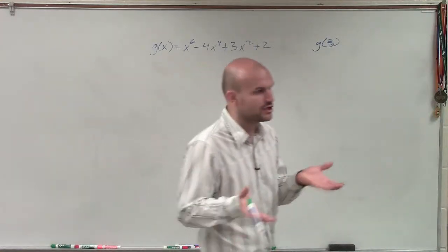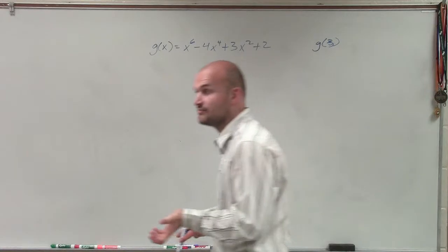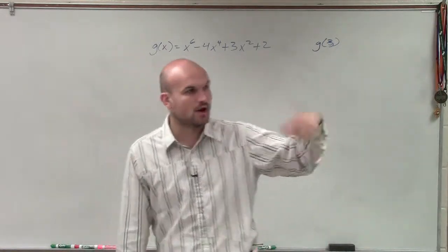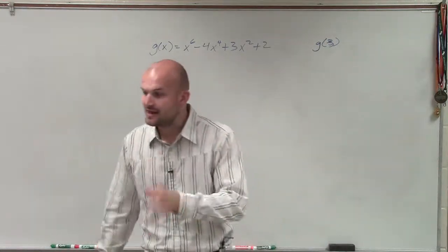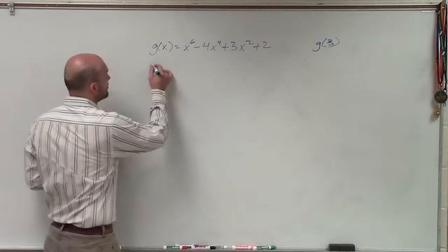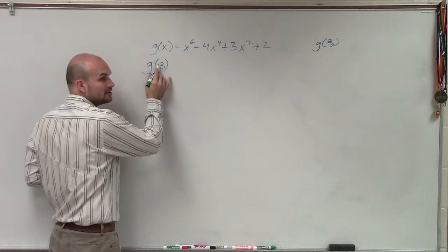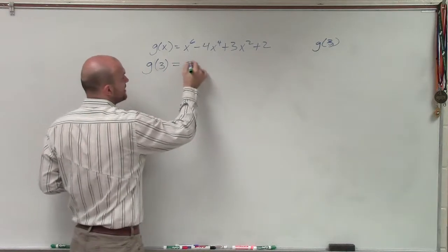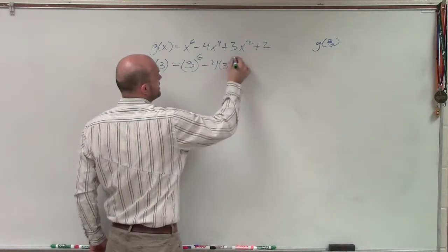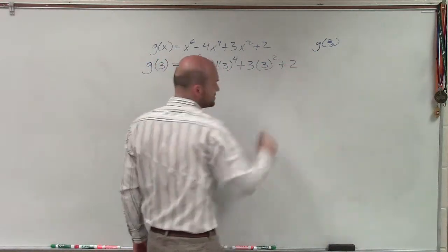Because remember, there's two different ways we could determine if it was a zero. We could apply synthetic division, and by applying synthetic division, if we got a remainder of zero, we knew that our zero of our polynomial was a zero. And then we could use the remainder theorem. And remember what the remainder theorem was, is plugging in your zero that you're trying to solve. So I'd have 3 to the 6th power minus 4 times 3 to the 4th power plus 3 times 3 squared plus 2.